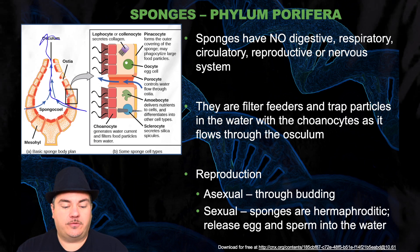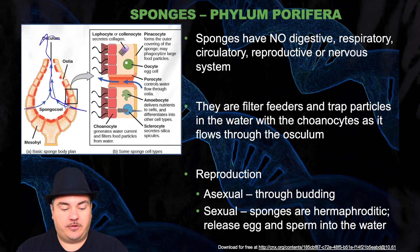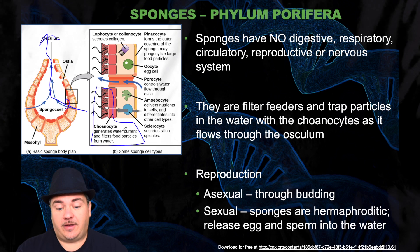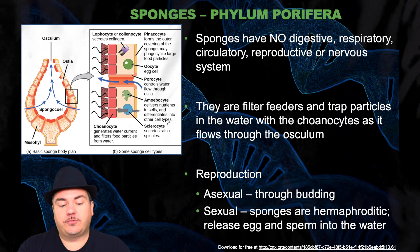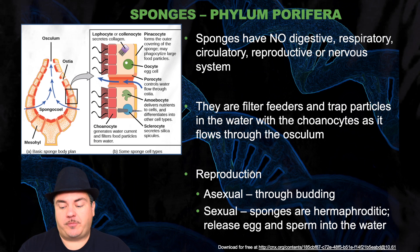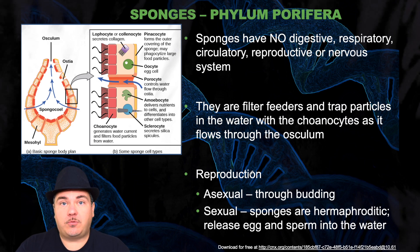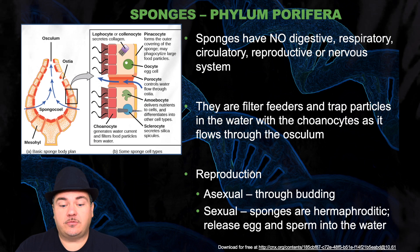As water flows through the sponges, cells lining the interior of the sponge — shown in orange here — are called choanocytes, and those are what trap the food particles. Their reproduction can be asexual through budding, or sexual, because sponges are hermaphroditic — they release egg and sperm into the water. So sponges are Parazoa: no true embryonic tissues.